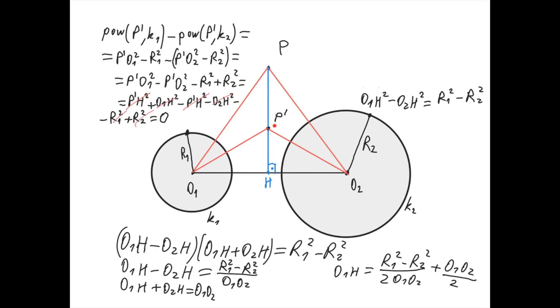The power of any point on this line is equal for both circles. This special line, which is perpendicular to the line connecting the centers of the circles, is called the radical axis of the two circles.